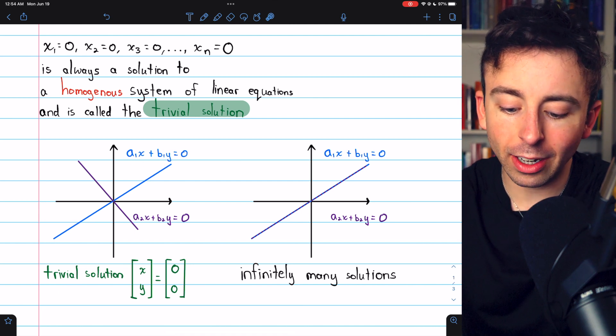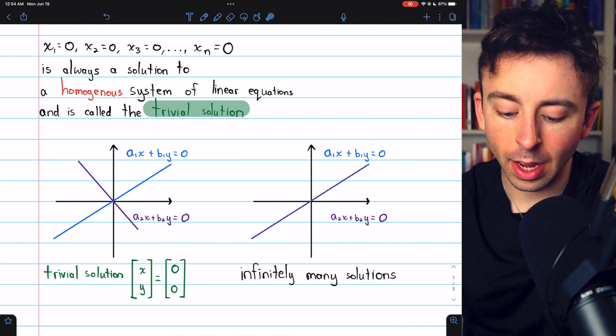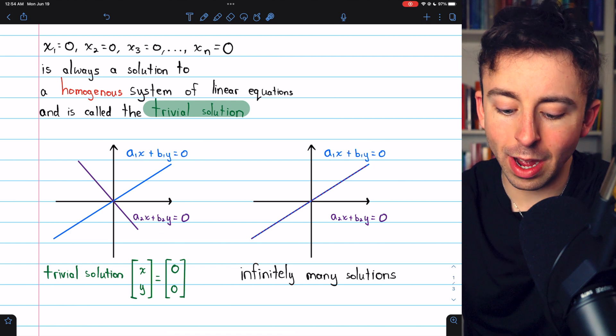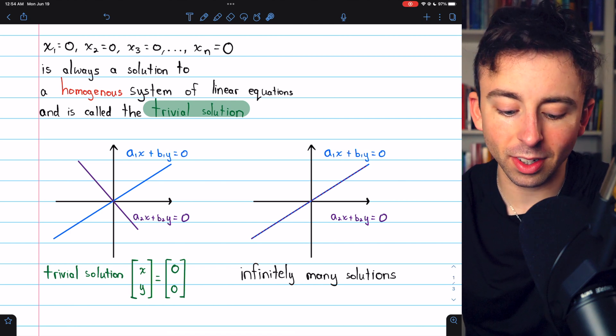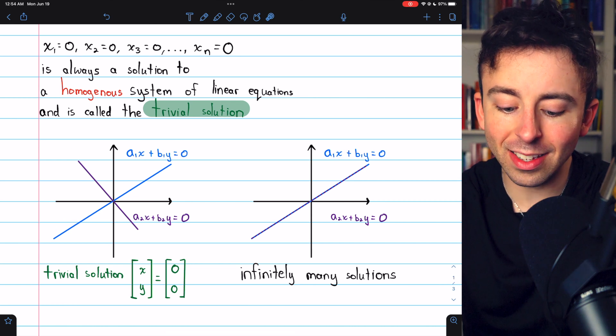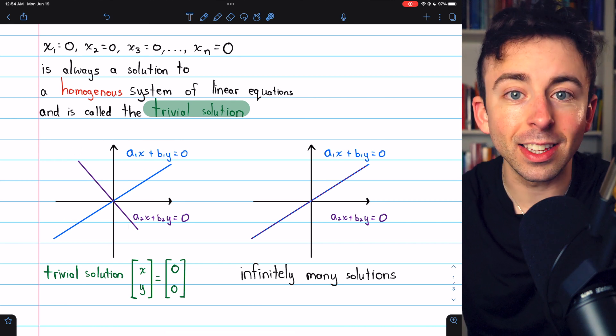We've got two unknowns, a1x + b1y = 0, and then this other equation, a2x + b2y = 0. The trivial solution is where these lines intersect at the origin.